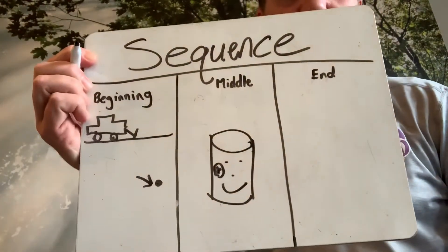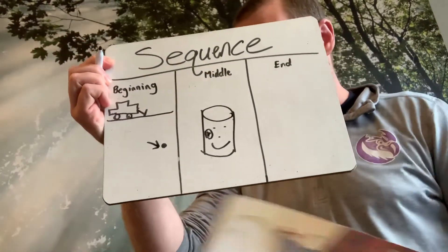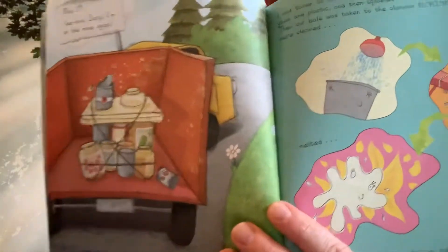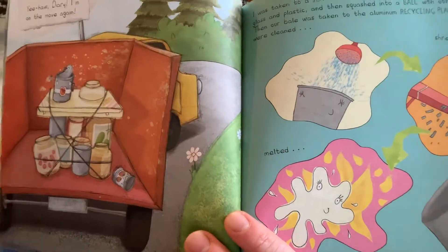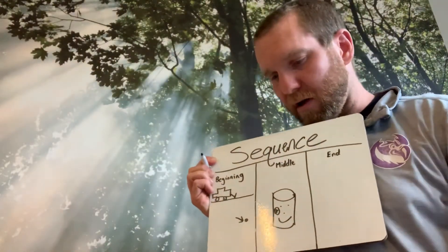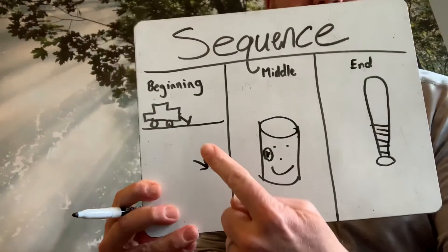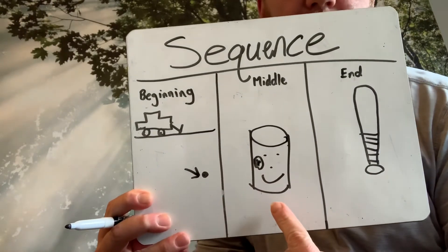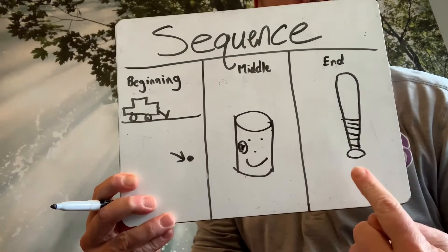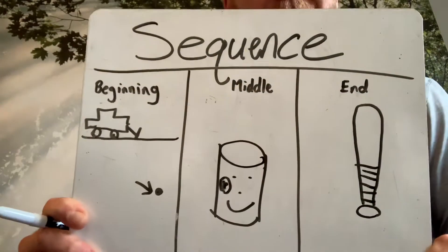Did he stay a can of fruit the rest of the time? No. Something happened. He got recycled — after the fruit was eaten, he got recycled, taken back to the factory. Where, at the end, he was turned into a baseball bat. Can you see our character on the last page? At the end, he is an aluminum bat. So, at the beginning our aluminum is underground. In the middle, he was turned into a can. And at the end, he was turned into an aluminum bat. That is the sequence of our story.